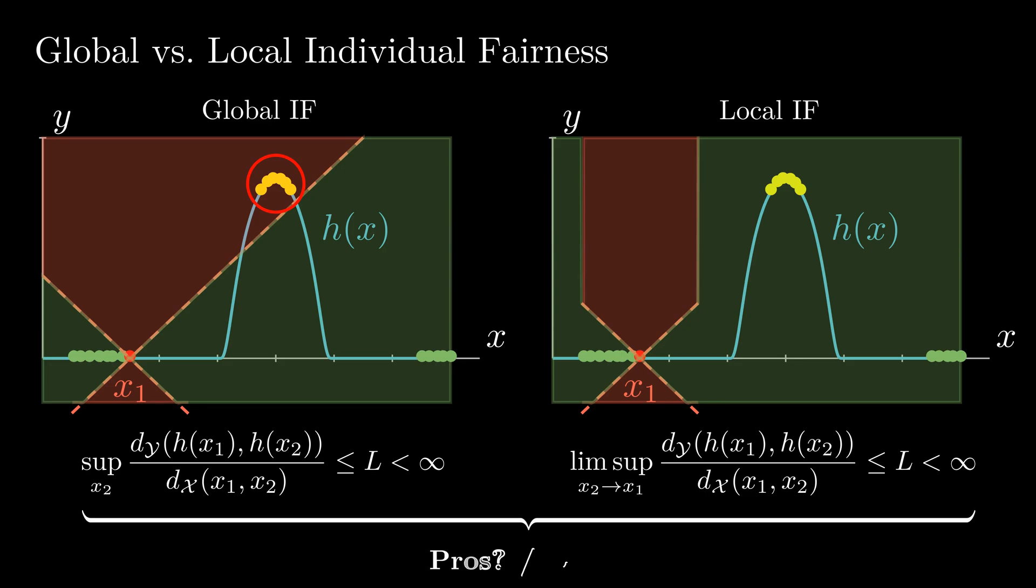There are two benefits of local individual fairness. As there are fewer constraints, the optimization problem becomes more feasible, and using our algorithm, we demonstrate a closed-form solution for local IF. Additionally, as fewer constraints have to be satisfied, fewer modifications of the predictions are necessary, which helps preserving the prediction accuracy.